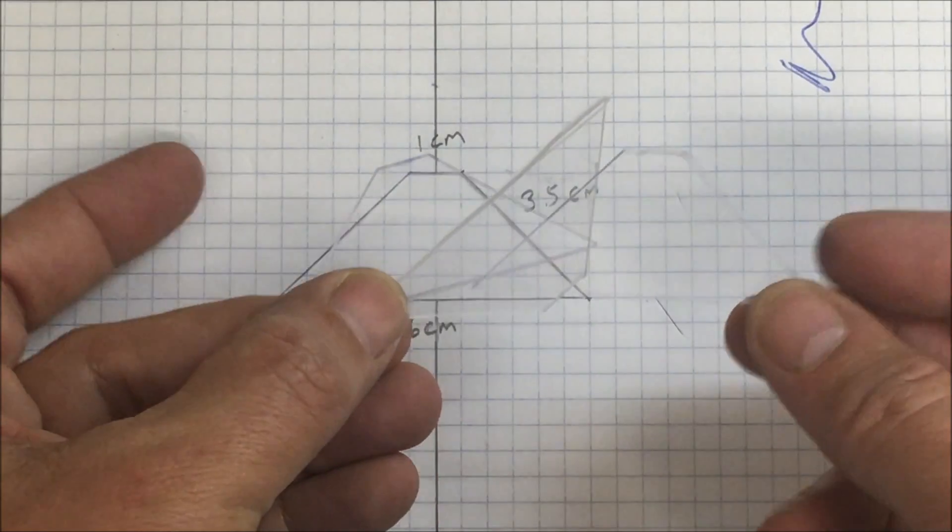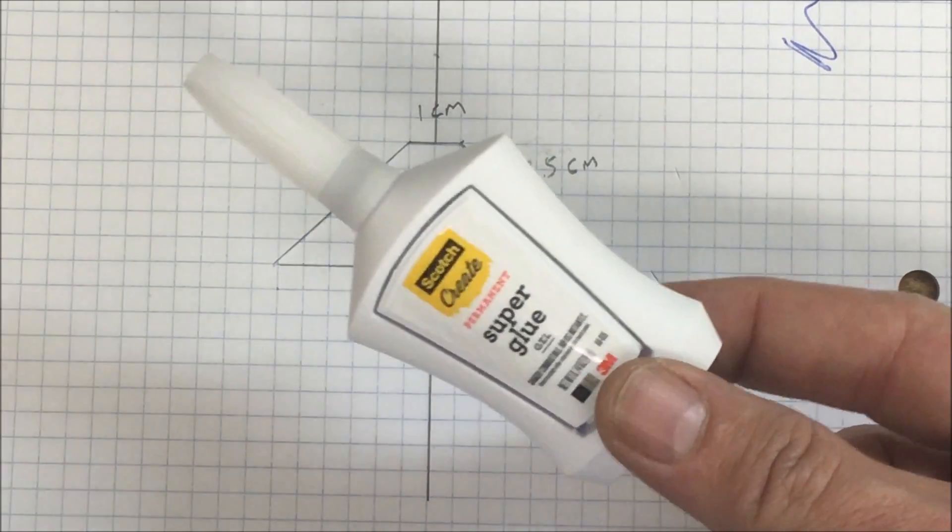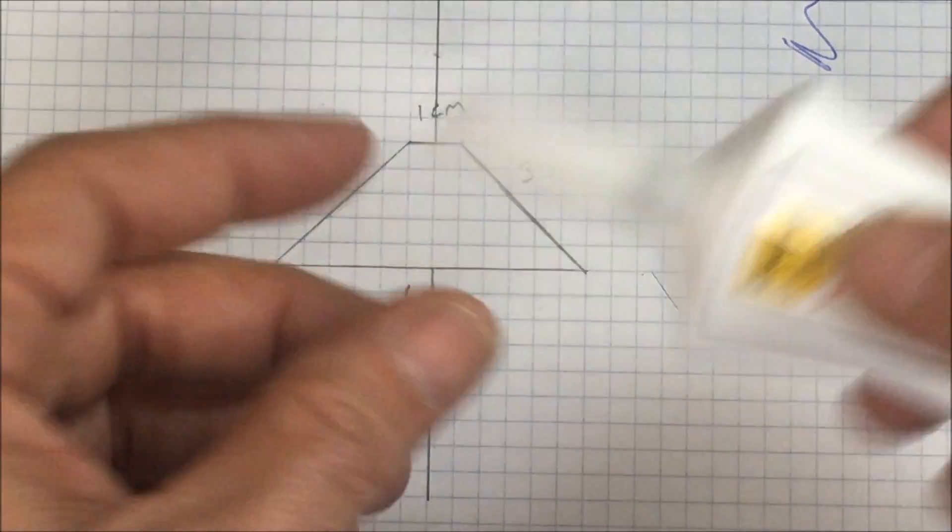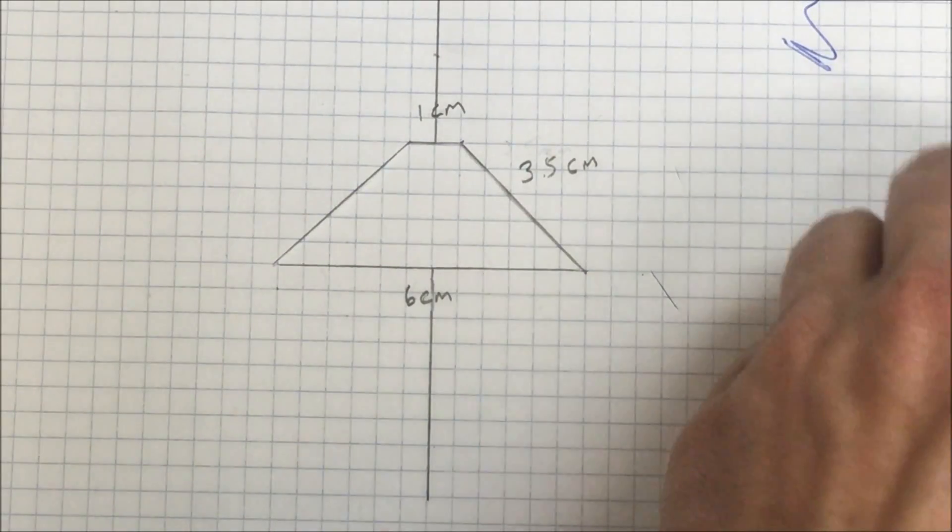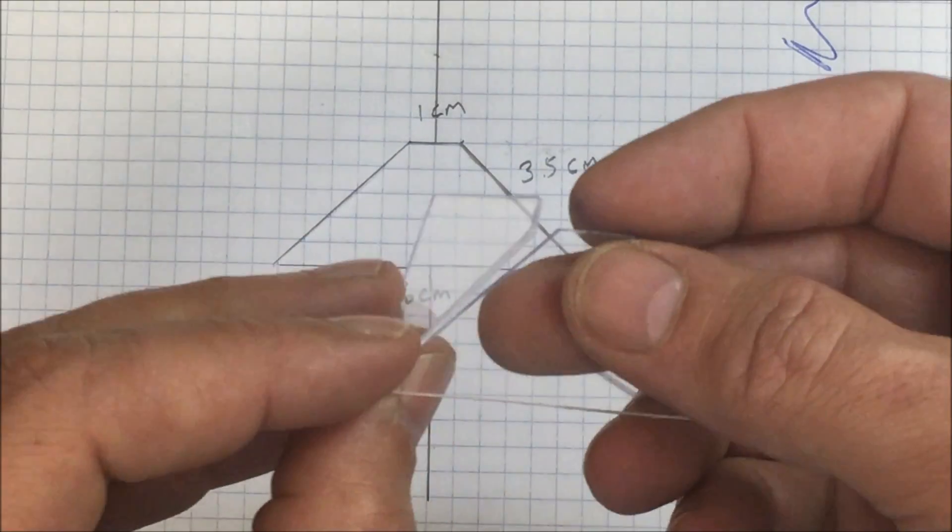Now that you've got your three pieces you're going to grab your super glue. Once you put the pieces together just a little bit of super glue goes a long way, you don't need much. A few drops here and there and it should stick together fine.